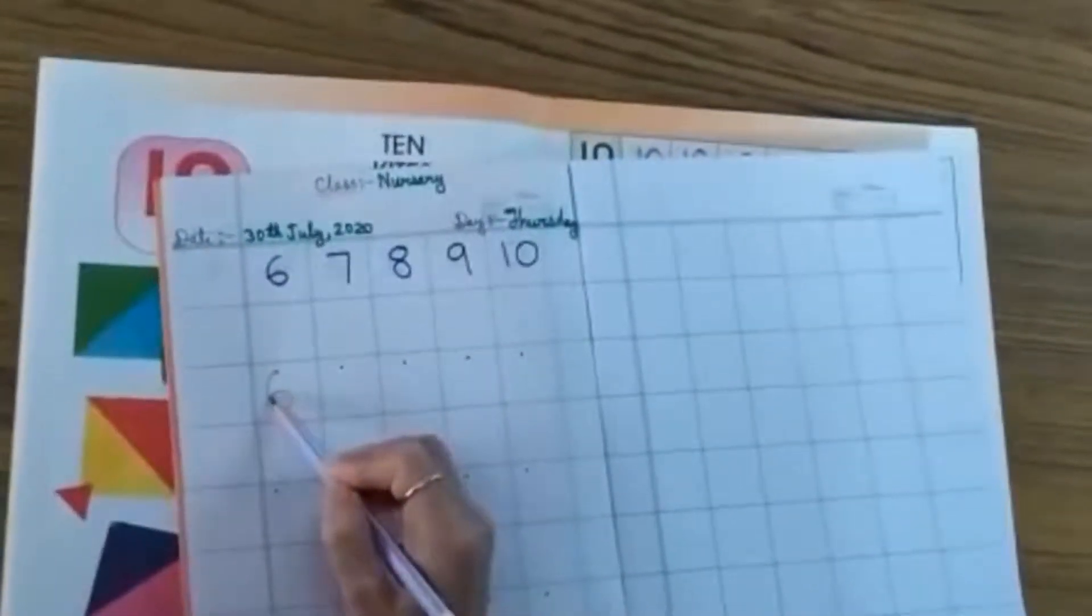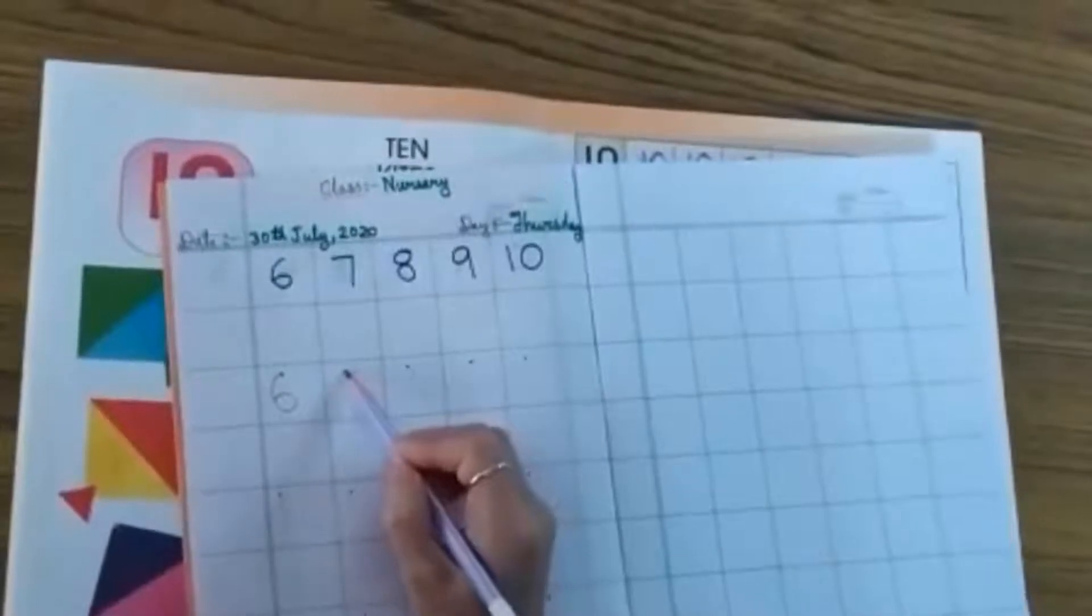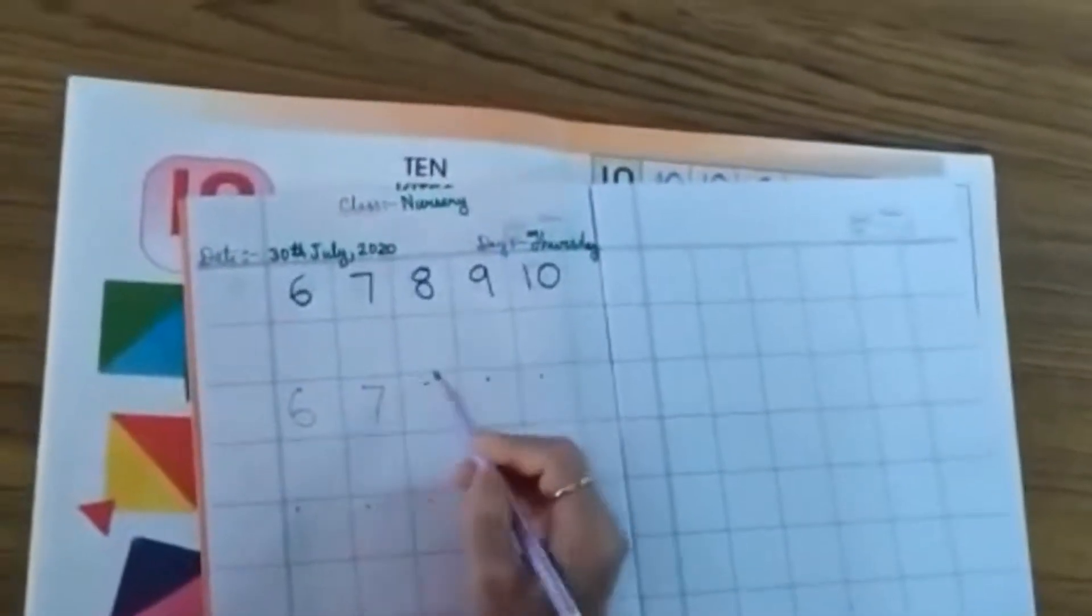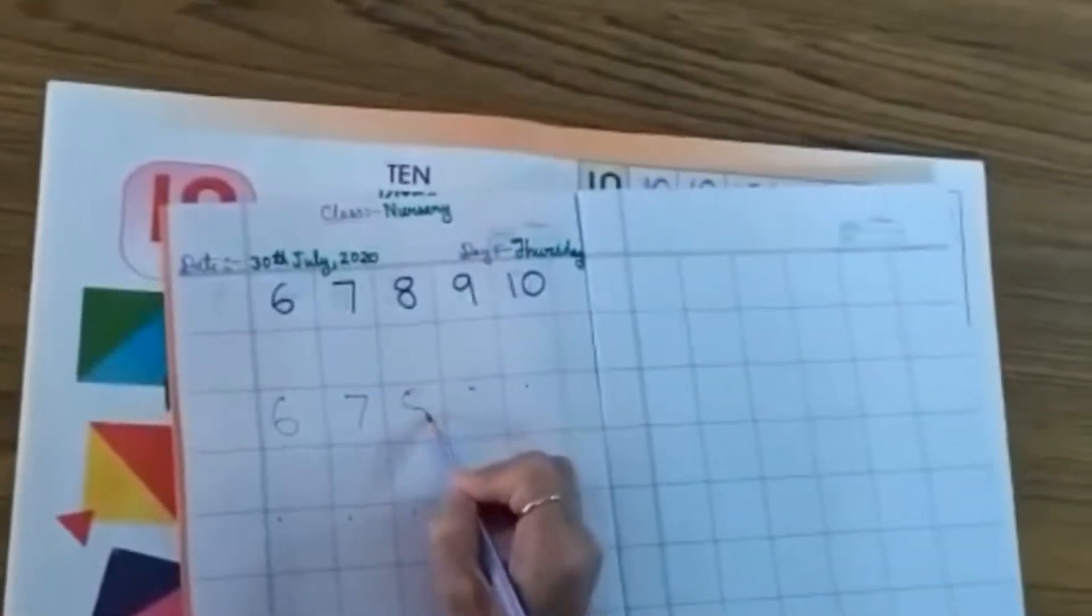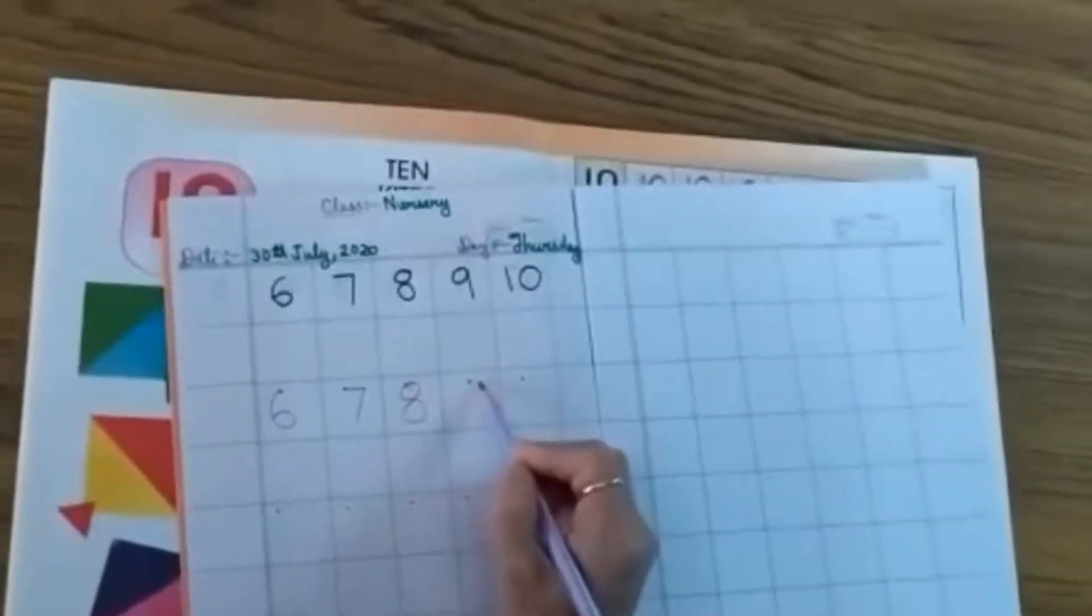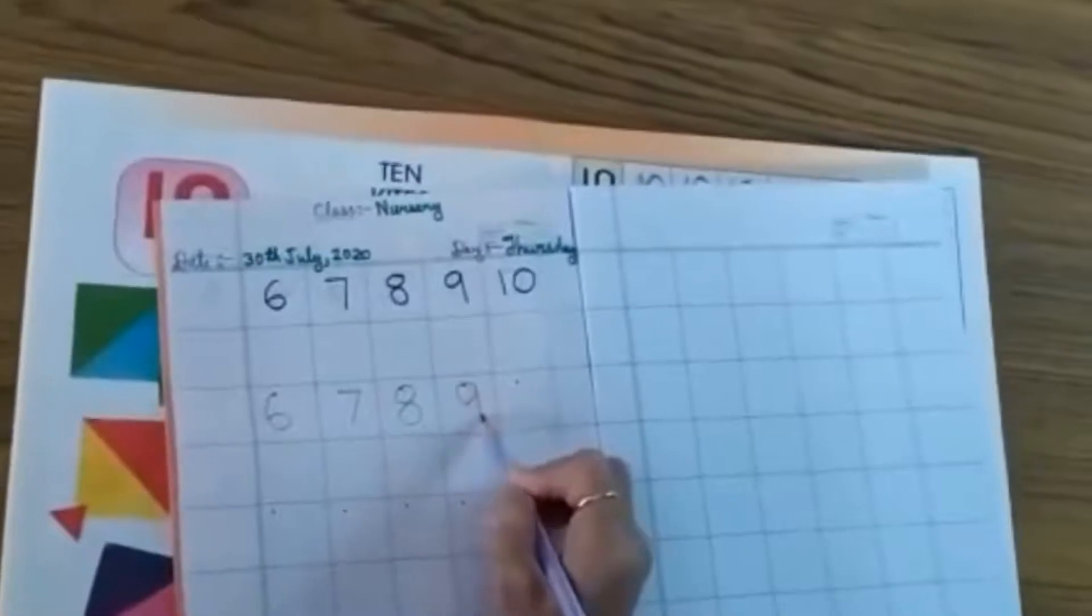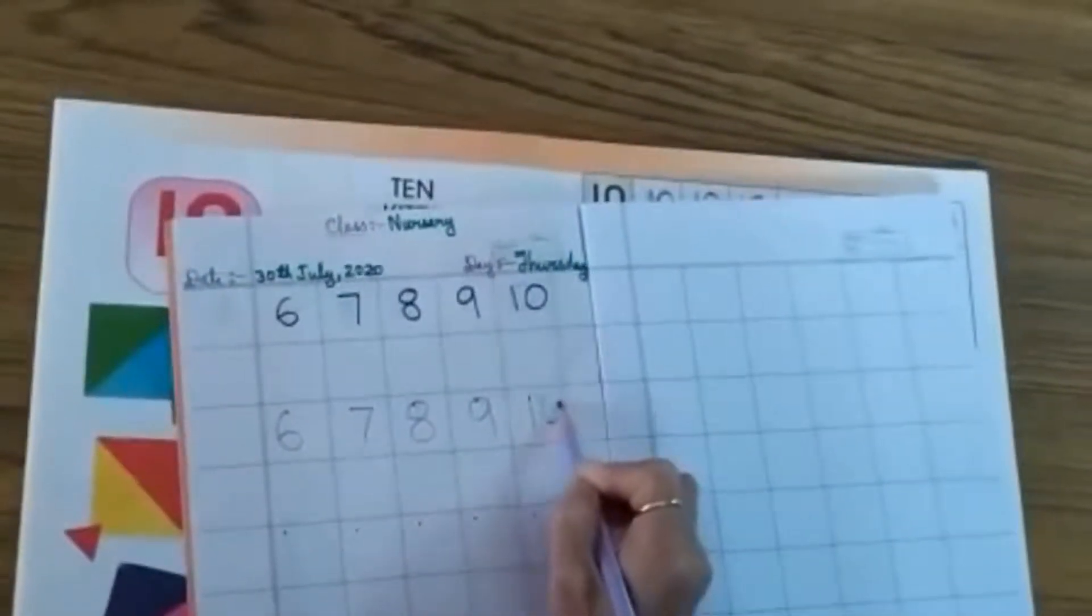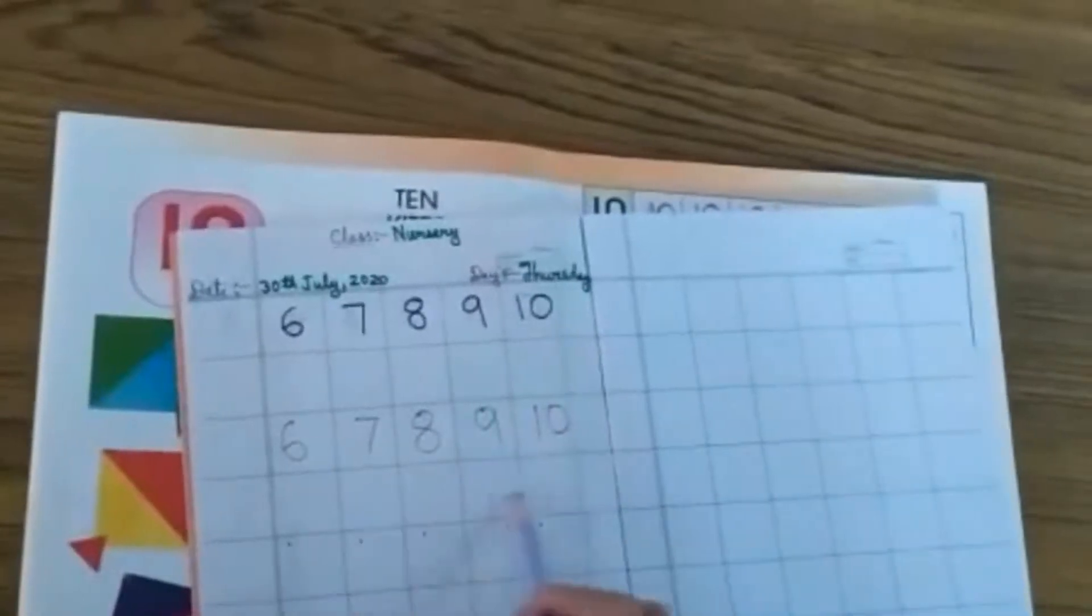So you write on the dots number 6, 7, 8, 9, 1, 0, 10. Then you write 1, 0, 10. You leave 1 line.